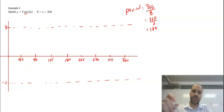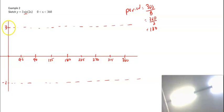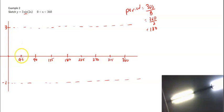And now we draw our curve. It's a sine curve, so start at the origin. Start here, up to here, down to here, down to here, back to the start. Up at 225, middle at 270, down at 315, middle at 360.